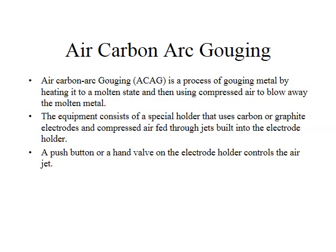Air carbon arc gouging is a method of cutting or gouging metal by melting it with the heat of an electric arc and then blowing away the molten metal with a high velocity jet of compressed air. The flow of compressed air is parallel and external to the carbon electrode. Because this process does not depend upon oxidation of the metal, air carbon arc gouging is very effective in cutting non-ferrous metals.